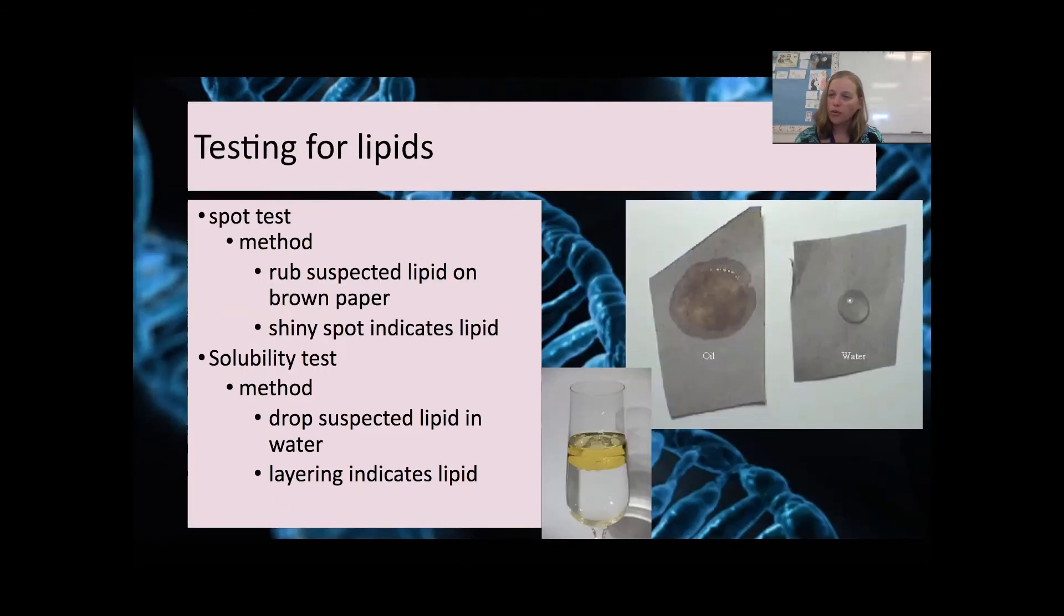We already looked at how you would test for lipids in your online lab. This is the results of your spot test. You can see that we have a greasy or shiny spot in the peanut oil and in the peanut butter, but the rest of these pretty much leave no spot when they are dried, so this indicates that we have lipids here, but the rest of these food groups were very low if they had any lipids in them at all.